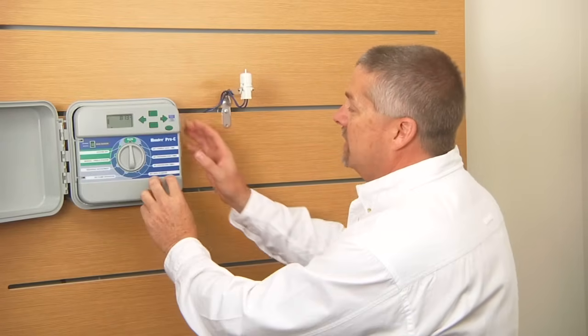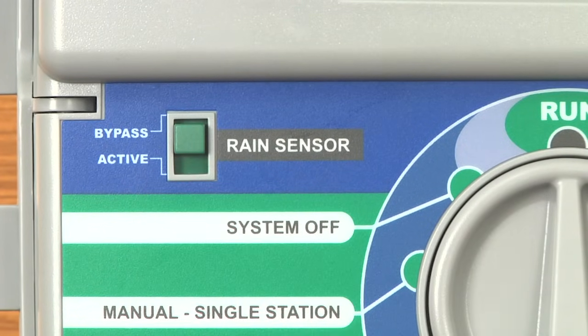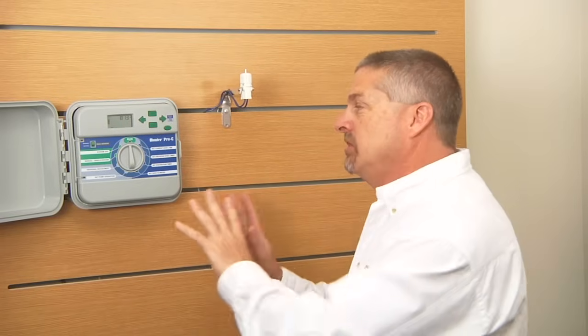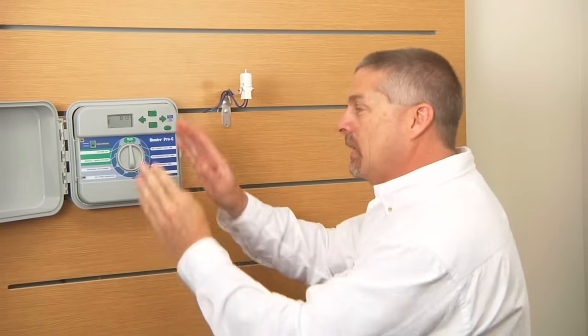First thing you want to look at is, it says sensor off, so let's go to bypass. Does the controller work normally? If it does, you know your controller is good to go and you have to look at the rain sensor circuit.